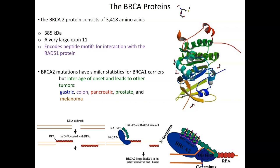BRCA2 mutations have a similar increased cancer risk as BRCA1 in the heterozygous state, but the age of onset tends to be a little later, likely because we have redundant mechanisms for repairing double-strand breaks. However, what distinguishes BRCA2 mutations is that they give rise to other cancers in addition to breast cancer — cancers found in both males and females — including gastric cancer, colon cancer, pancreatic cancer, prostate cancer, and melanoma. Breast cancer in biological males is also often highly correlated with BRCA2 mutations.